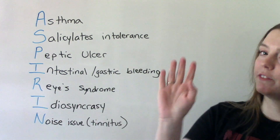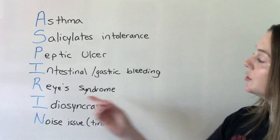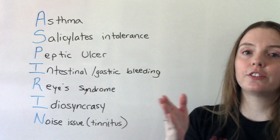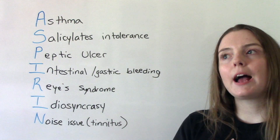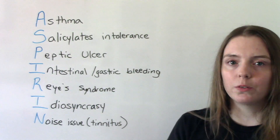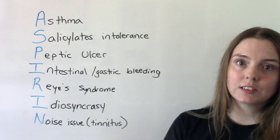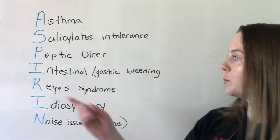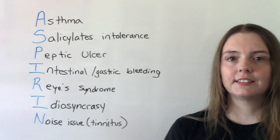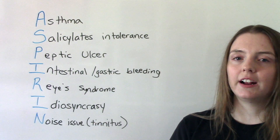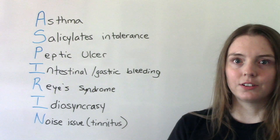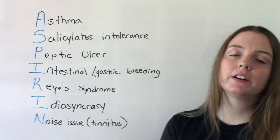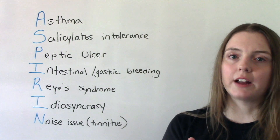Another potential but very rare thing that could happen is Reye's syndrome. This happens in children who are given aspirin usually after they've had an infection — typically a viral infection — and they're given aspirin to help reduce their fever or pain. They can develop Reye's syndrome, which can cause things like swelling of the brain and confusion. So we have to be very careful about giving children aspirin in the first place.